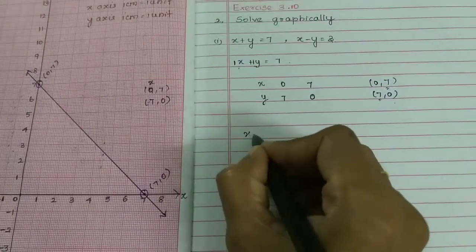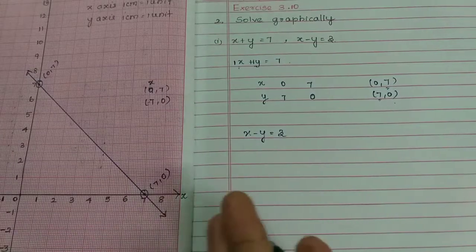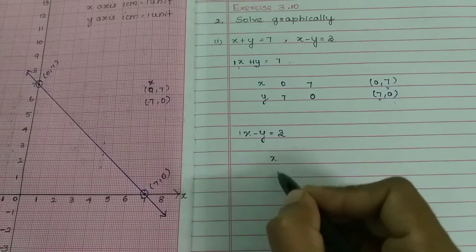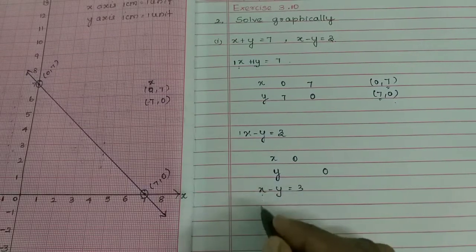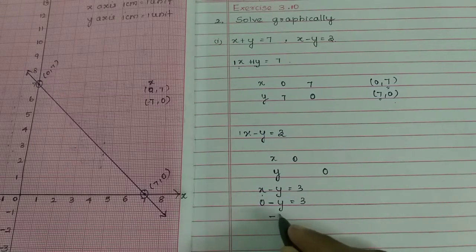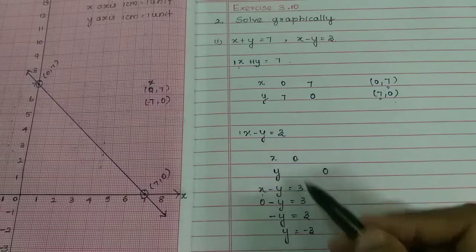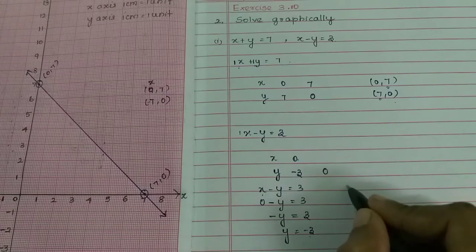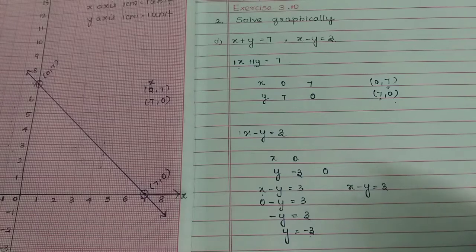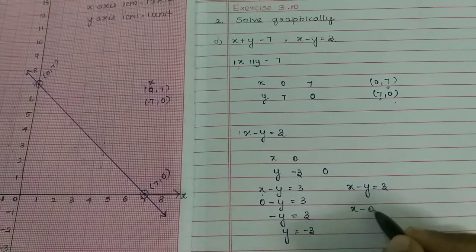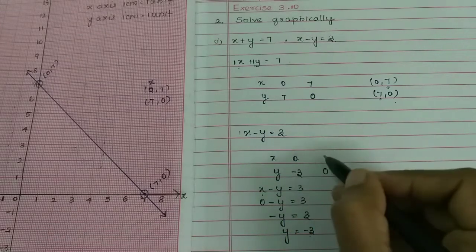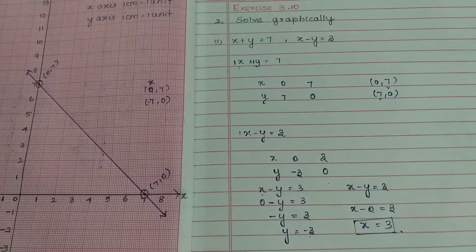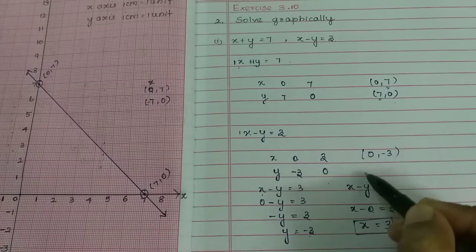The next equation is x minus y equal to 3. As usual, we will do the same thing. If x equal to 0, then 0 minus y equal to 3, so y equal to minus 3, giving point (0, minus 3). If y equal to 0, then x equal to 3, giving point (3, 0).